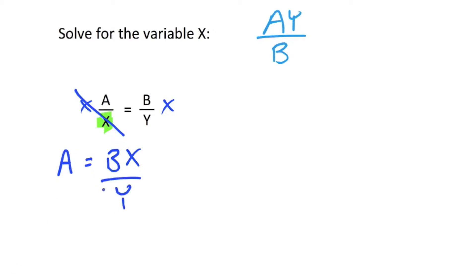I still don't like that there's fractions here, so now let's multiply both sides by y. So we're going to times it by y over here and y over here. The y's again cancel out, and now we have y times a on the left equals bx on the right.